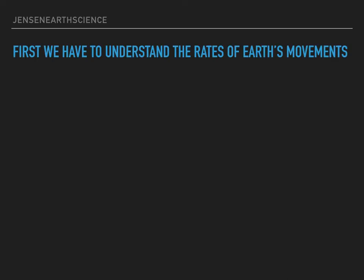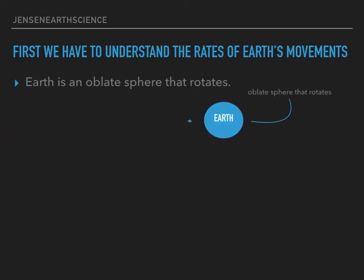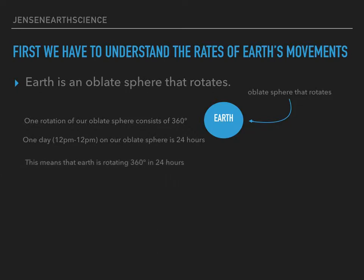Earth is an oblate sphere that rotates. Here's Earth — it's an oblate sphere, and it rotates. One rotation on our oblate sphere consists of 360 degrees. One day on our oblate sphere, 12pm to 12pm, is 24 hours. This means that Earth is rotating 360 degrees in 24 hours.